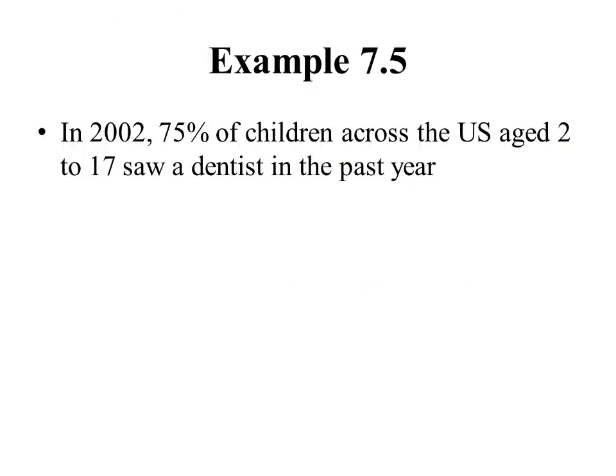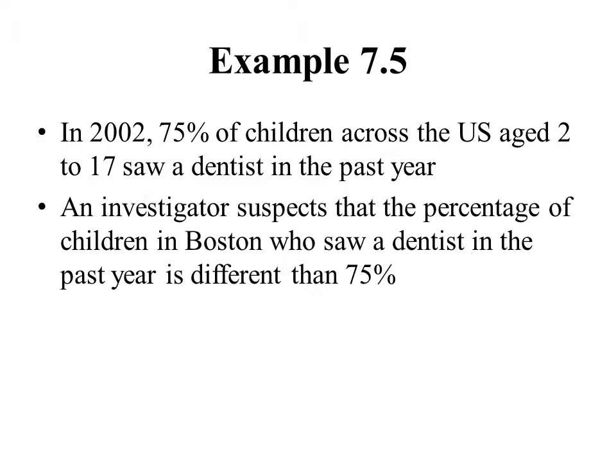Our first example is Example 7.5 from the textbook. In the year 2002, 75% of children across the U.S. age 2 to 17 saw a dentist in the past year. We're just going to take this number for granted. An investigator suspects that the percentage of children in the city of Boston who saw a dentist in the past year is different than 75%.